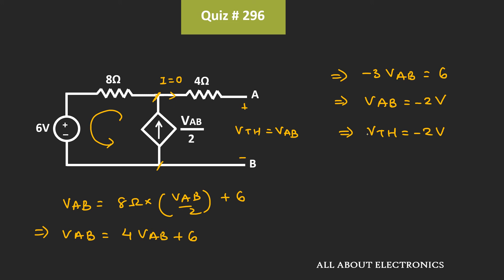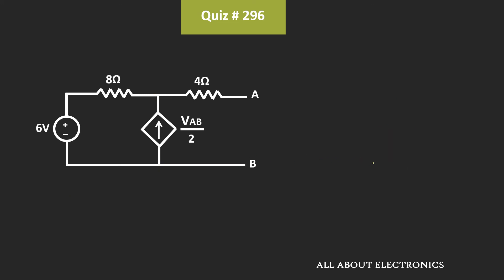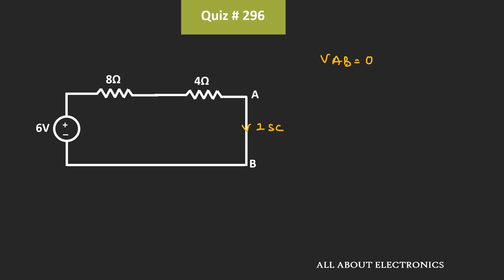Now let's find the short circuit current. To do so, we will short these two terminals and find the current flowing through the short circuit. Once we short the terminals, voltage Vab becomes zero, and because of that this dependent current source also becomes zero — it acts as an open circuit. So the short circuit current Isc equals 6V divided by (8 ohm plus 4 ohm), which equals 0.5 ampere.